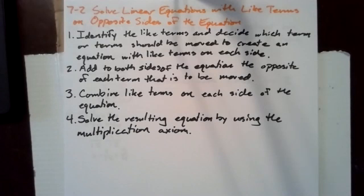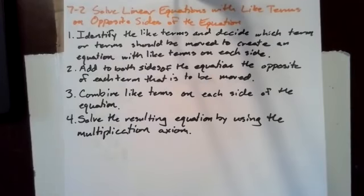To do so, first, identify the like terms and decide which term or terms should be moved to create an equation with like terms on each side. Second, add to both sides of the equation the opposite of each term that is to be moved. Third, combine like terms on each side of the equation. And fourth, solve the resulting equation by using the multiplication axiom.